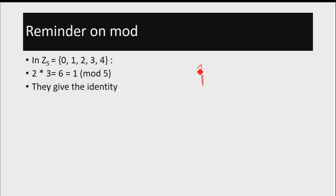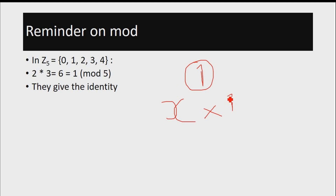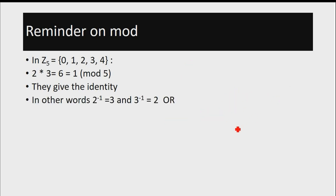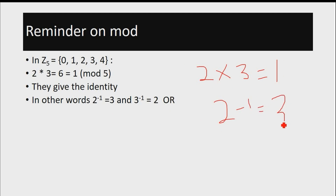These are the only elements you can get in mod 5, and it follows that 2 times 3 gives us the identity element. When we are dealing with multiplication, 1 is known as the identity element. Since by multiplying 2 and 3 we arrive at 1, we say that their multiplication gives us the identity element. The identity element is simply the element that when you multiply with it, you get the original element — any element x times 1 is equal to x. Therefore, the inverse of 2 is equal to 3 and the inverse of 3 is equal to 2, since the inverse is simply the number that when we multiply to 2, we arrive at 1.